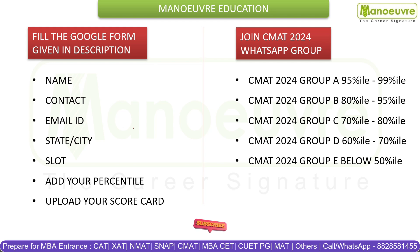Along with this, make sure that you all fill the Google Form which is given in the description. Through this Google Form, you'll have to fill in details including your name, contact number, email ID, state, city, your slot — whether it is one or two — your percentile, and upload your scorecard. Through these basic details and scores, we will be able to guide students about the expected cutoff and the colleges which they can target, and help with a lot of information useful for your admission process.